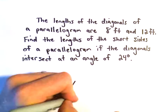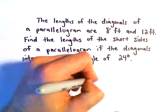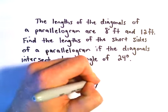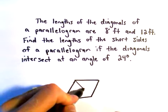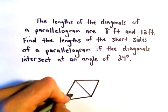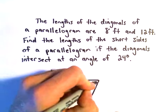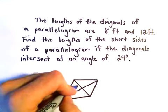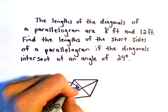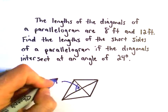Let's see if I can make a sort of parallelogram there. That looks okay. The diagonals, it says the diagonals intersect at an angle of 24 degrees. So this angle, that'll be our angle of 24 degrees.